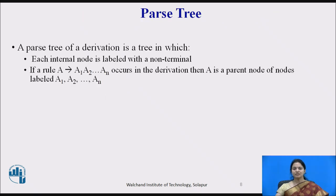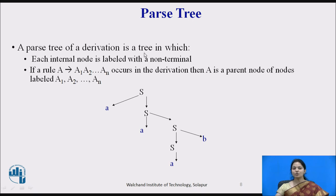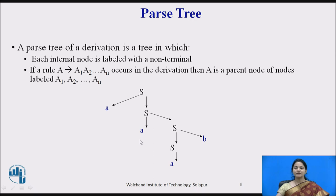The tree which is derived is called a parse tree. A parse tree of a derivation is a tree in which each internal node is labelled with a non-terminal. If a rule A determines A1, A2 up to AN occurs in the derivation, then A is a parent node with children labelled A1, A2, and so on. The leaves of the parse tree are terminals and cannot be further derived. Here A and B shown in blue are terminals, and S is a non-terminal which can be further derived.